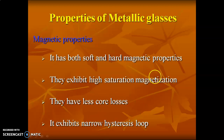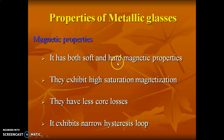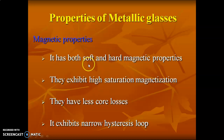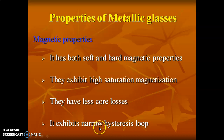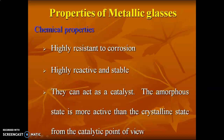Magnetic property: metallic glasses exhibit properties of both hard and soft magnetic materials. Soft magnetic means it can be easily magnetized; hard magnetic means it cannot be easily magnetized. Metallic glasses exhibit both hard and soft magnetic properties.